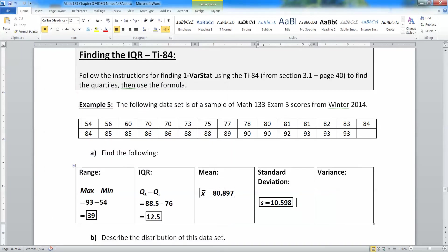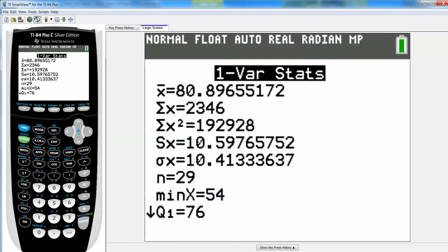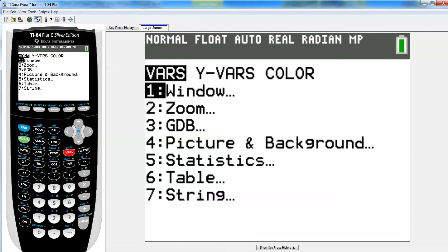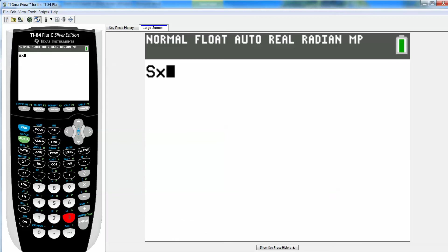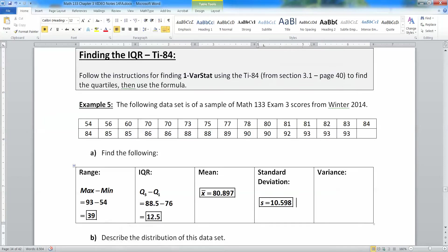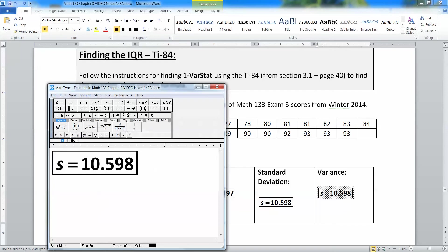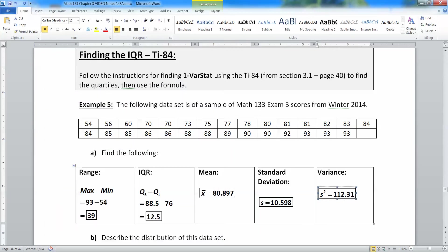And then the variance, again, I'll use the lots of decimal places method. So I'm going to take variables, pick number 5, which is statistics, and then pick number 3, which is SX. And I'm going to square it, enter, and it gives me 112.31. That's S squared, 112.31. There we go. Just a little review there.